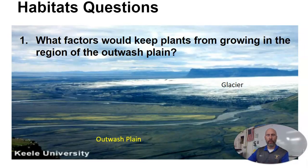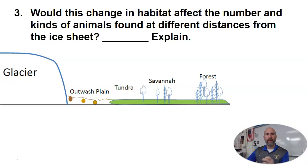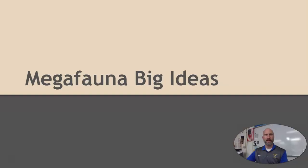Let's consider some questions. First: what factors would keep plants from growing in the region of the outwash plain? The answer is water — lots and lots of water — making it difficult for plants to get a hold because there's just too much. Next: explain the change in frequency of trees as you move from the tundra to the forest. Trees become more prevalent the further you get from the glacier because of timing — those trees have to have a chance to grow. And: would this change in habitat affect the number or kinds of animals found at different distances from the ice sheet? Yes, of course — different animals are going to live in a tundra versus a forest.